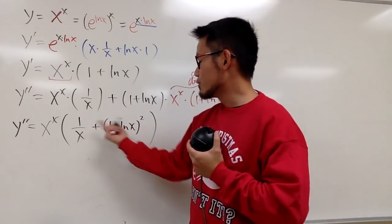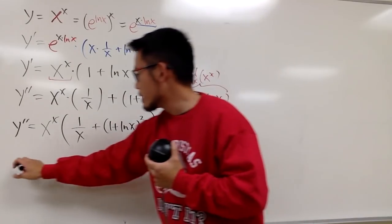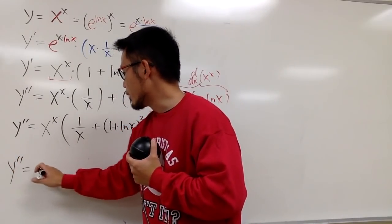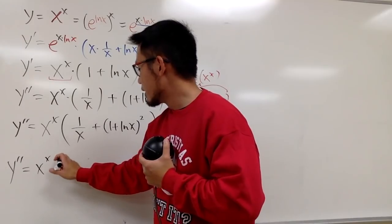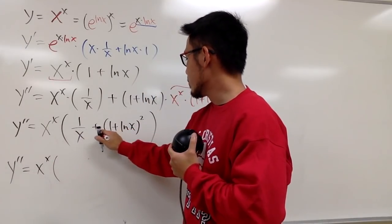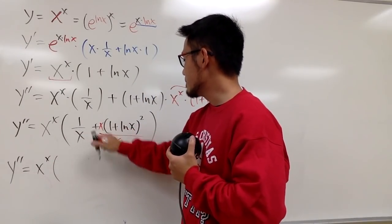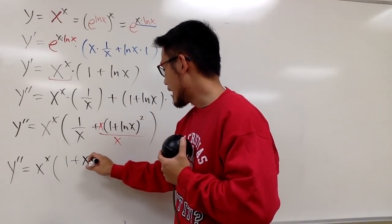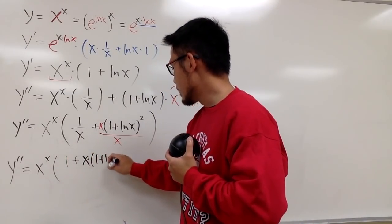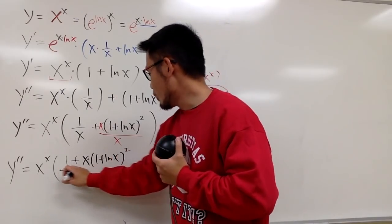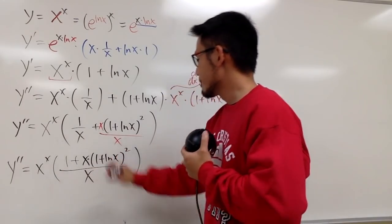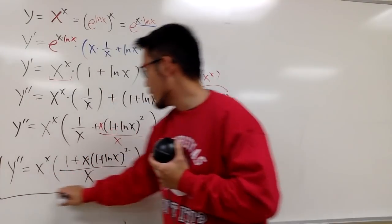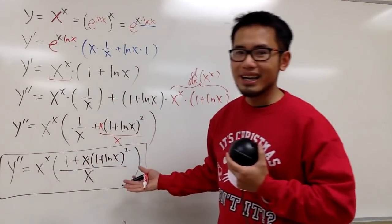And perhaps, sometimes, we'll just combine the fractions real quick. So, I can also rewrite this as x to the x power times. I will just have to multiply this by x on the bottom, x on the top. So, this is 1 plus x times 1 plus ln x square all over x. In fact, I will just box this for you guys.